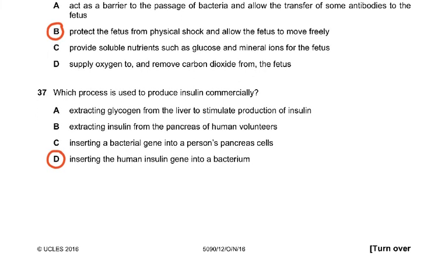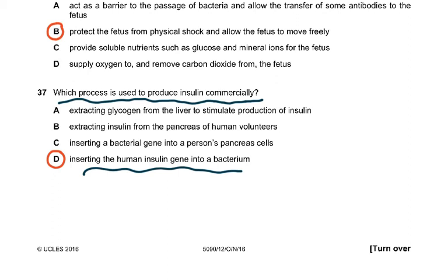Question 37: which process is used to produce insulin commercially? The answer is inserting the human insulin gene into a bacterium. All other options were wrong: extracting glycogen from the liver, extracting insulin from volunteers, or inserting a bacterial gene into a person — all clearly incorrect.